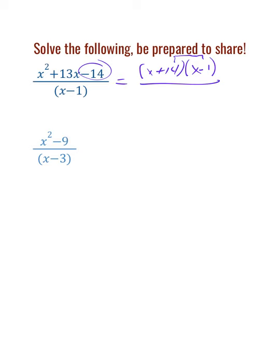14 times negative 1 is negative 14. If you do the outside and inside of FOIL, we end up with negative 1x and positive 14x, which is plus 13. The x minus 1 is in the denominator. As we factored, we reveal that there's an x minus 1 in both numerator and denominator, so we end up with a final answer of x plus 14.